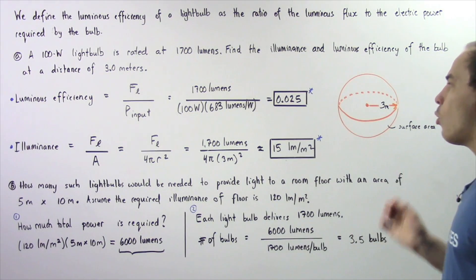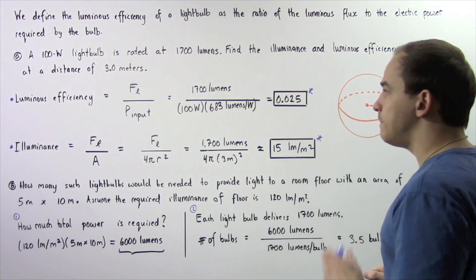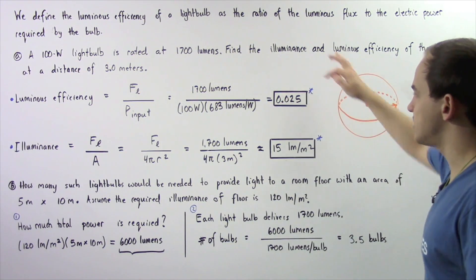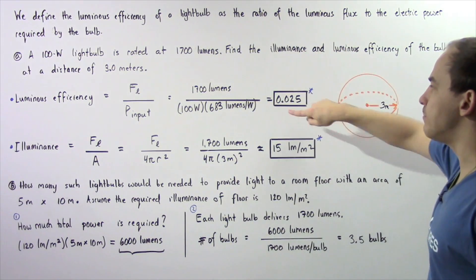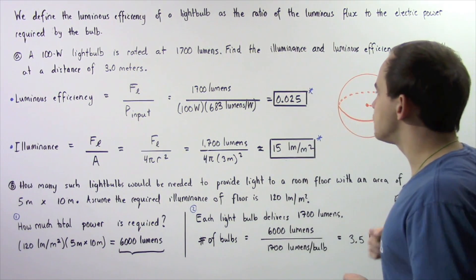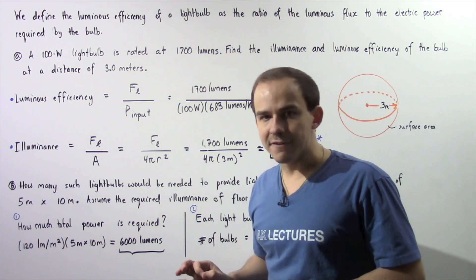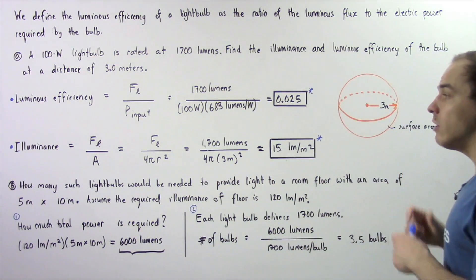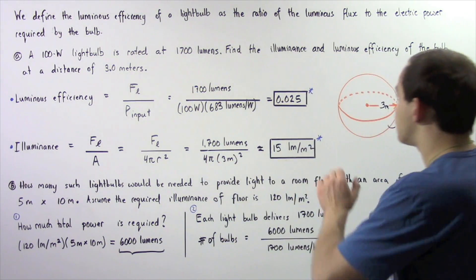So 1700 lumens divided by 100 multiplied by 683 lumens gives us about 0.025 as our luminous efficiency. The percentage is simply this multiplied by 100 which gives us 2.5%. Now let's move on to the second section.